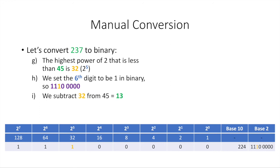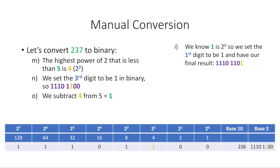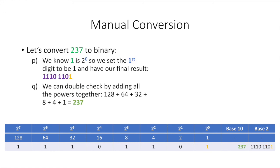The highest power of 2 less than 45 is 32, or 2⁵ — set the sixth digit to 1, giving 111 followed by five zeros, which equals 224. We still need to represent 13 more. The highest power of 2 less than 13 is 8, or 2³ — set the fourth digit to 1: 1110 1000. Subtract 8 from 13, leaving 5. The highest power less than 5 is 4, or 2² — set the third digit to 1. Subtract 4 from 5, leaving 1 — set the first digit to 1. Final result: 237 in binary is 11101101.